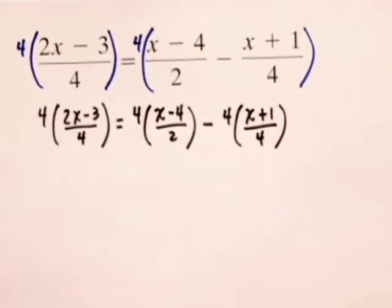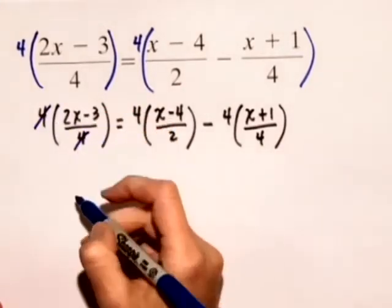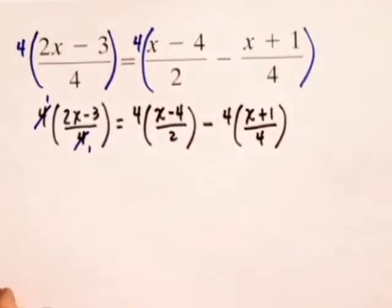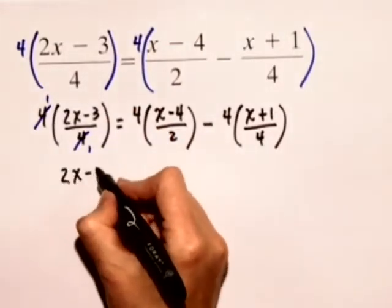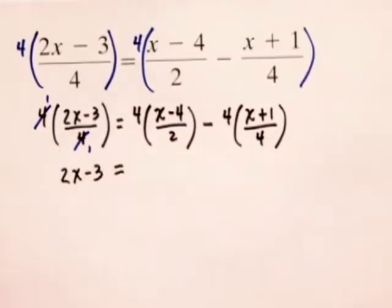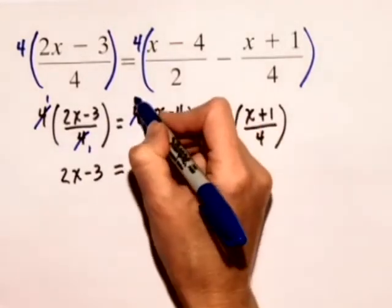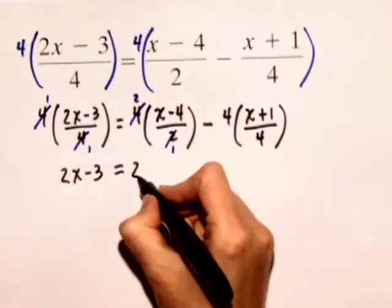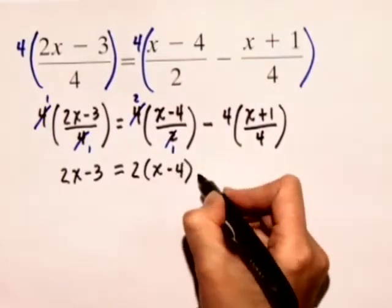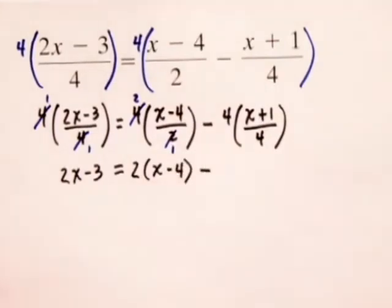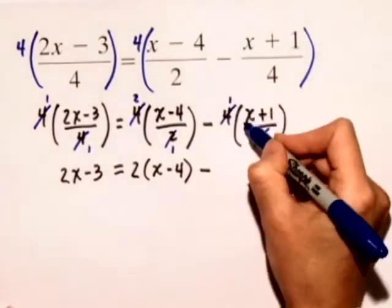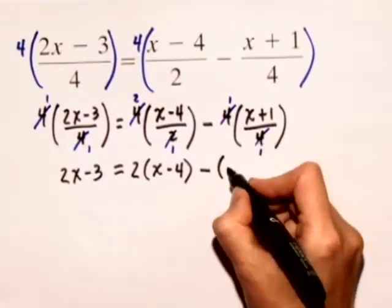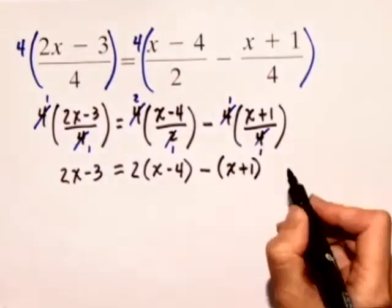Now in this next step, we can divide out common factors. 4 divided by 4 gives us 1 over 1, so we have just 2x minus 3 on the left hand side, is equal to, on the right hand side, 4 divided by 2 is 2 over 1, so we have 2 times the quantity x minus 4, minus, again, 4 divided by 4 gives us 1 over 1, and we just have, be careful, we need the parentheses still, we just have the quantity x plus 1.